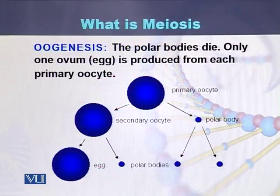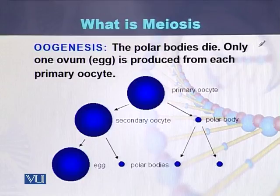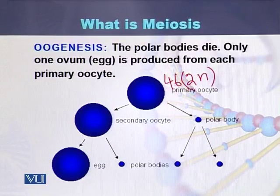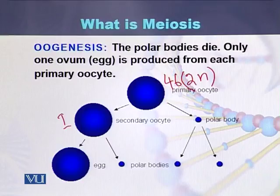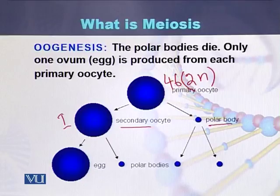In the case of females, meiosis is called oogenesis. As a result of oogenesis, there is a primary oocyte containing 46 chromosomes, or 2n — two sets of chromosomes. As a result of meiosis 1, this primary oocyte is converted into a secondary oocyte and a polar body. Each of these two cells contains 23 chromosomes, or 1n.